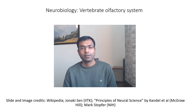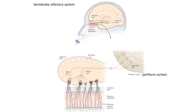Here is a schematic of the vertebrate olfactory system. We smell through the nose — the odors enter the nasal cavity, and inside the nasal cavity there is a region of the skin known as the olfactory epithelium. On this part of the skin, the olfactory sensory neurons are present, which contain the odorant receptors. The axons of these neurons then go to the brain, passing through a part of the skull known as the cribriform plate. The olfactory sensory neurons are present here, and their axons pass through holes in the cribriform plate and reach the brain.